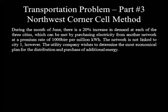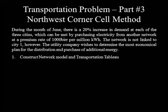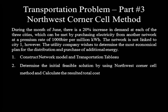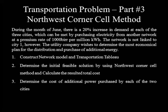The questions are: Question one, construct an electric power transportation table. Question two, determine the initial feasible solution using the Northwest corner method and calculate the total cost. Question three, determine the cost of additional power purchased by each of the two cities.